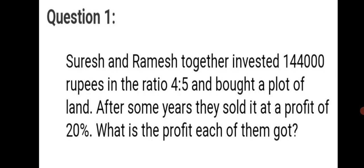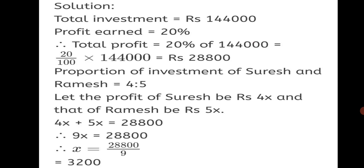Question 1: Suresh and Ramesh together invested Rs. 1,44,000 in the ratio 4:5 and bought a plot of land. After some years, they sold it at a profit of 20%. What is the profit each of them got? Here we have the total investment, the ratio in which they invested, and the profit earned. Total investment is equal to Rs. 1,44,000. Profit earned is equal to 20%. To find it in rupees, total profit is equal to 20% of the entire investment.